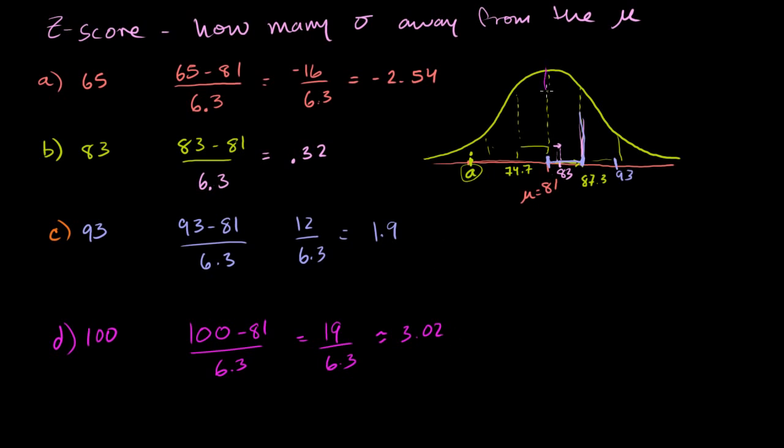So remember, this was the mean right here at 81. We go one standard deviation above the mean, two standard deviations, the third standard deviation is right there. 3.02 standard deviations above the mean, that's where a score of 100 would be. You can see the height of this, it's actually a very low probability of getting something higher than that.